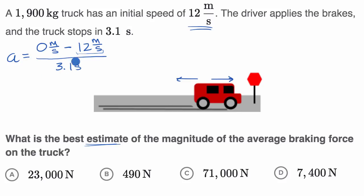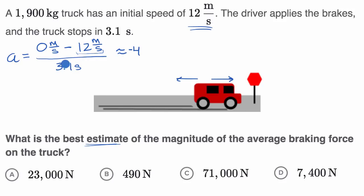So what is this going to be approximately equal to? Negative 12 over 3.1 is going to be approximately negative four. It might be a little closer to negative 3.9, but I'll go with negative four. The units are meters per second squared.